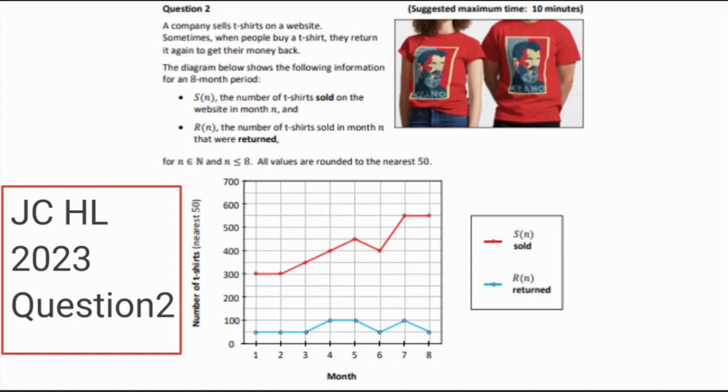Moving on to Question 2, this is a graph question. You can see in the graph we have the red line which indicates the number of items sold, which are t-shirts, and the blue line which indicates the number of items returned.